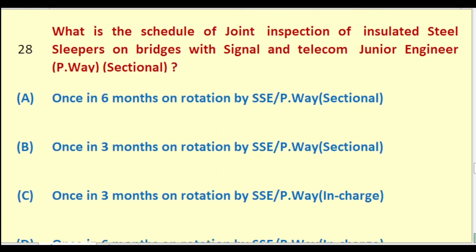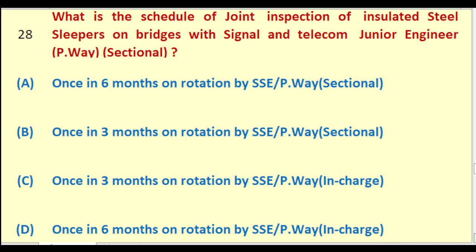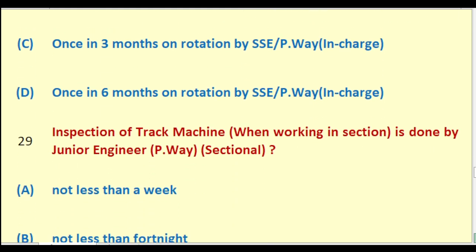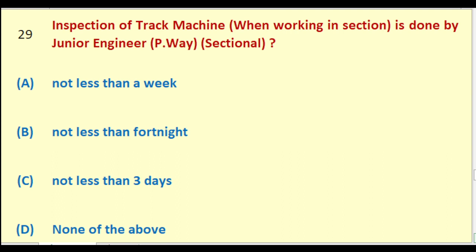What is the schedule of joint inspection of insulated steel sleepers on bridges with Signal and Telecom by Junior Engineer Permanent Way Sectional? Options: once in six months on rotation by SSE PW Sectional; once in three months on rotation by SSE PW Sectional; once in three months on rotation by SSE PW in charge; once in six months on rotation by SSE PW in charge. The right answer is: once in six months on rotation by SSE Permanent Way in charge.